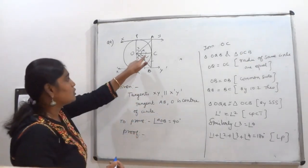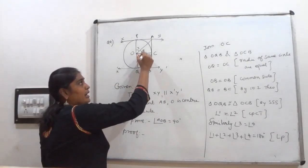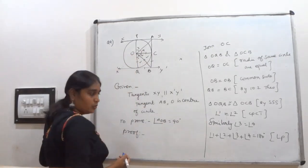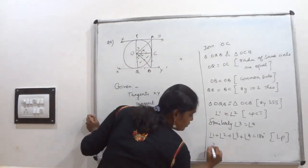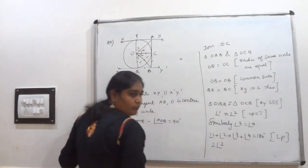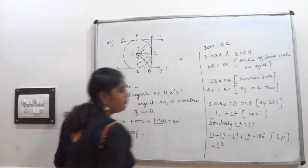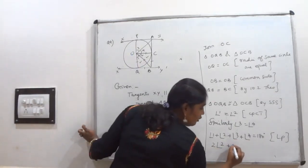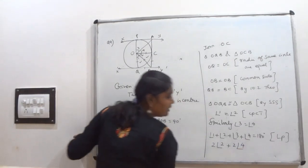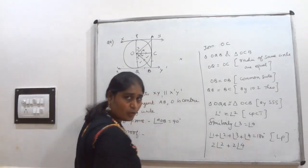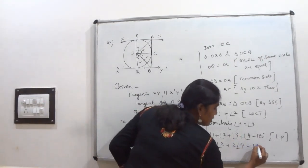Now you see, 1 equal to 2 I have proved. So I can write in place of 1, 2. So I can write this one 2 times angle 2. Like angle 3 equal to angle 4, so I can write 2 times angle 4. We can write because angle 3 equal to angle 4, equal to 180. 2 is common in both angles, so take it out. Angle 2 plus angle 4 which is equal to 180.